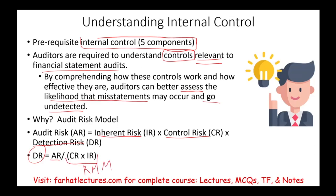When we discussed the audit risk model, we said that RMM — risk of material misstatement — and detection risk have an inverse relationship: when one goes up, the other goes down. Control risk is part of RMM, the risk of material misstatement.